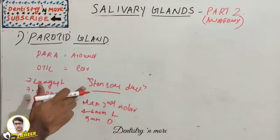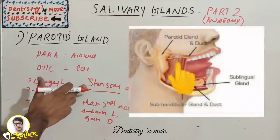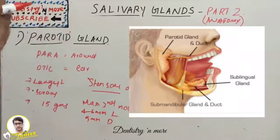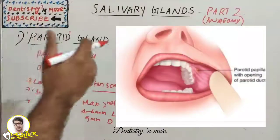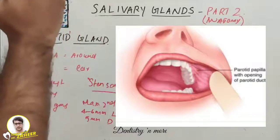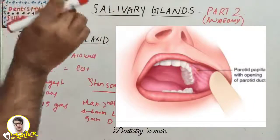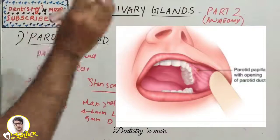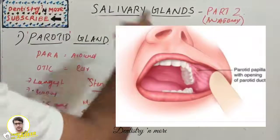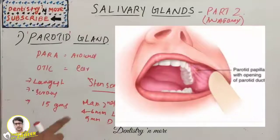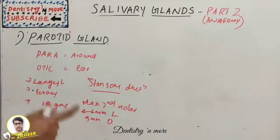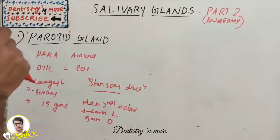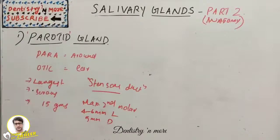The parotid duct is known as Stenson's duct. It crosses the masseter muscle, then pierces the buccinator to open at a papilla on the buccal mucosa opposite to the maxillary second molar. This duct measures around four to six centimeters in length and five millimeters in diameter — almost a square shape.